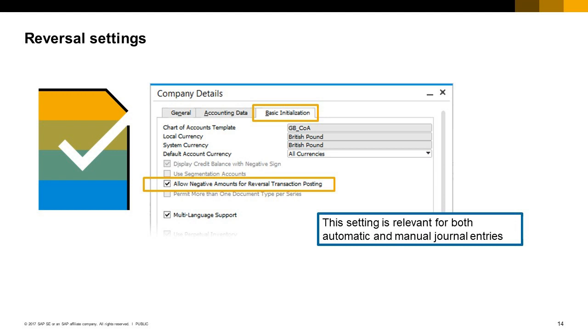On the basic initialization tab, you can select the allow negative amounts for reversal transaction posting field to switch on the reverse transaction with negative amounts. Otherwise, the system will use the standard reverse transaction. This setting is relevant for both automatic, e.g. AR invoice, and manual journal entries.